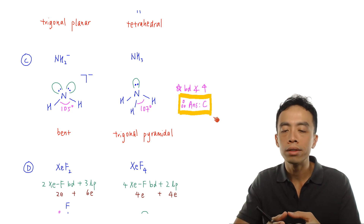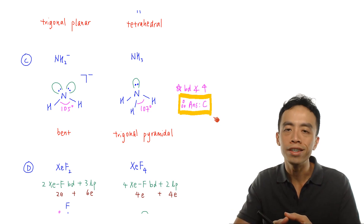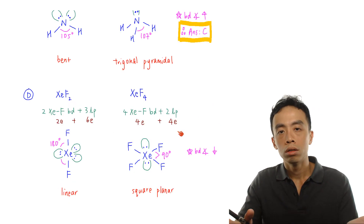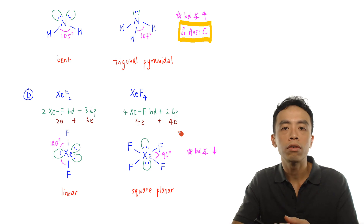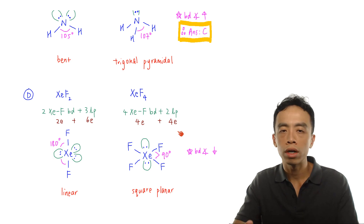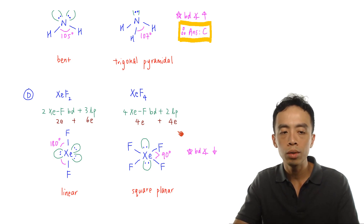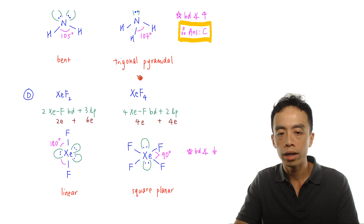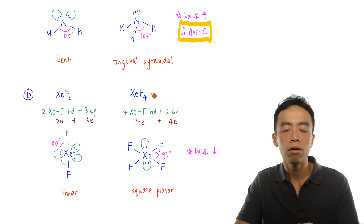So for this exercise, the answer to this question is option C. For the sake of completeness, let's also run through option D, which has XeF2 and XeF4.